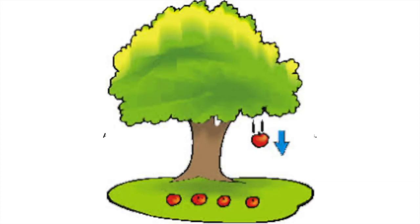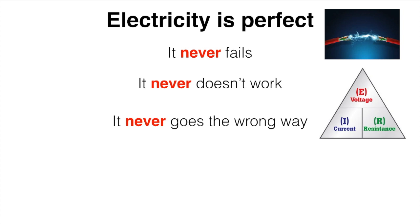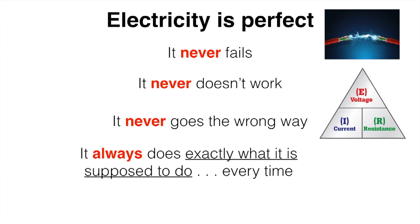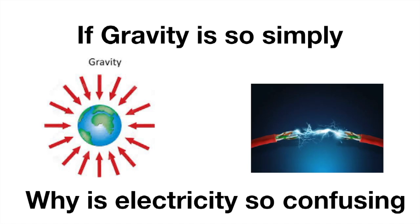Now remember, you can't see gravity, but it's still there. I'm going to show you some things that you were looking right at, but didn't even know you were seeing. Electricity is perfect. It never fails. It never doesn't work. It never goes the wrong way. And it always does exactly what it is supposed to do every time. So we could also say that it is perfectly predictable. Now if gravity is so simple, why is electricity so confusing?